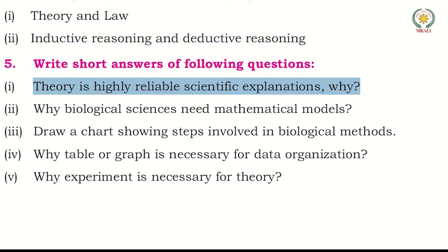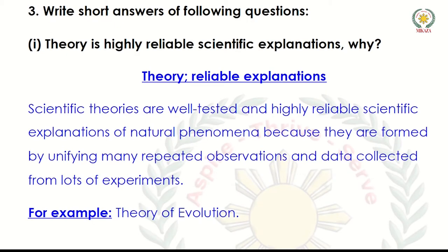Question number one: a theory is a highly reliable scientific explanation — why? Scientific theories are well-tested and highly reliable scientific explanations of natural phenomena because they are formed by unifying many repeated observations and data collected from lots of different kinds of experiments.